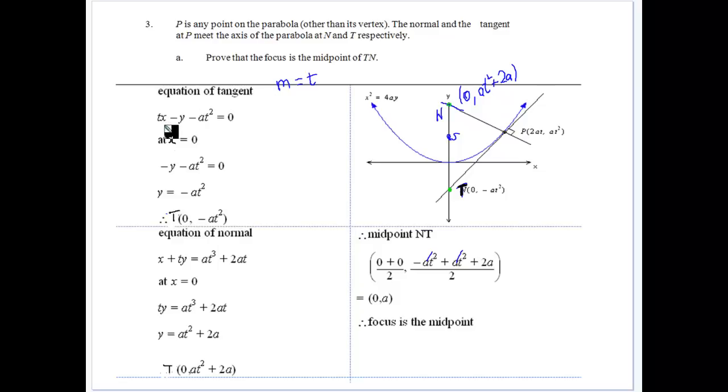So the equation of the tangent. Again, we know how to get the equation of the tangent. And on the y axis, we get the point T is equal to (0, -at squared) by sub 0 in. For the normal, we know what the normal is. So we can get the equation of the normal. So let's set the x area equal to 0. And we get N being at (0, at squared plus 2a).